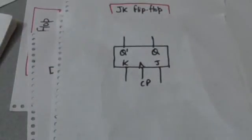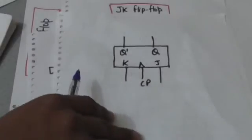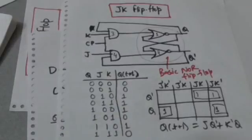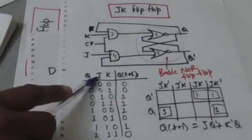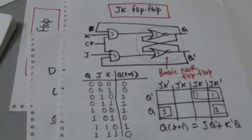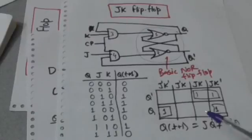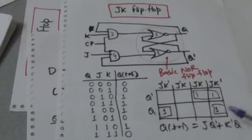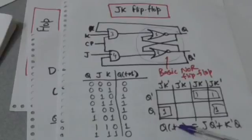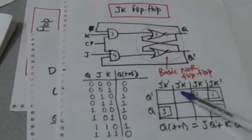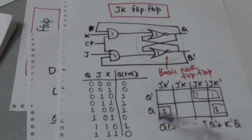This is the graphic symbol of JK flip-flop. This is the characteristic table of JK flip-flop, where Q is the present state and Qt+1 is the next state of the flip-flop. This is the characteristic equation of JK flip-flop, which is obtained by getting the minimized Boolean function of Qt+1 in terms of Q, J, and K using a three-variable Karnaugh map.